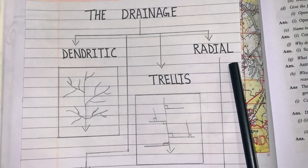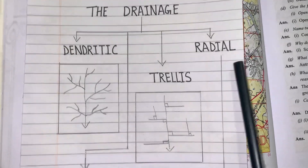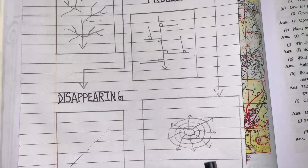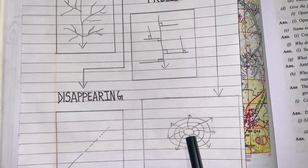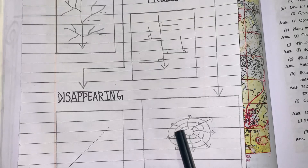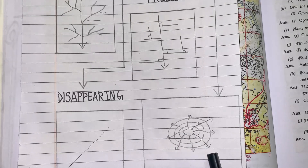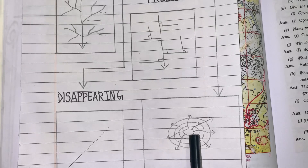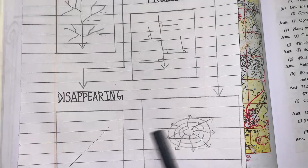The third one is radial drainage pattern. Here you will see that I have drawn circles — these are the contour lines. It shows that that area is a hilly area, and all the streams are flowing in different directions. This gives the pattern like the spokes of a wheel. This is radial drainage pattern.